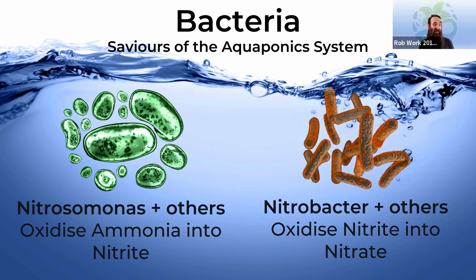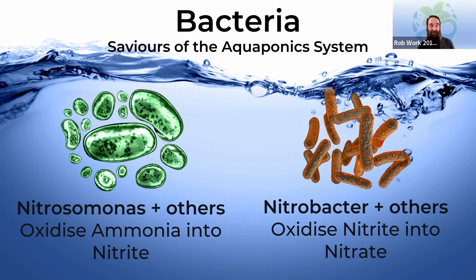You have a couple of different varieties. You have ammonia-oxidizing bacteria that will oxidize the waste generated by the fish — both ammonia and ammonium — into nitrite, and then you have nitrobacter and other nitrite-oxidizing bacteria that will convert that nitrite into plant-available nitrate, even though there are other forms of nitrogen that are plant available as well. They're all part of a happy ecosystem, and it's the bacteria that get the aquaculture and hydroponics working together.